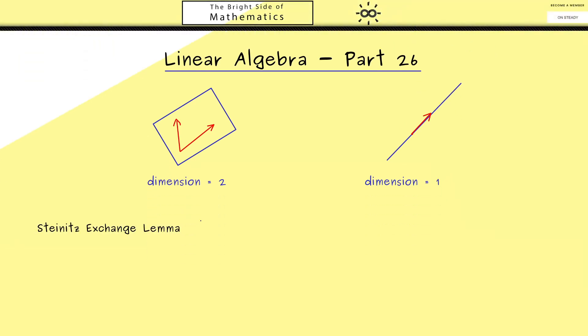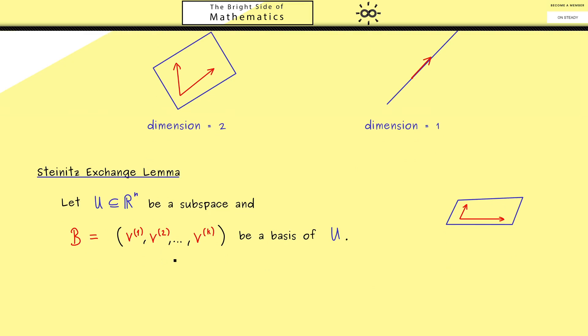Okay, so the first step of today is that we formulate this statement here. There, we start with the usual linear subspace U in R^n. So you know, it's a subset of R^n that conserves the linear structure of the vector space. Moreover, now we also assume that we have a fixed basis B of our subspace U. The basis elements in the basis B we call just v^(1), v^(2) until v^(k). Okay, so you see, we have a fixed subspace and a given basis of U.